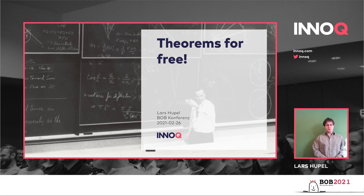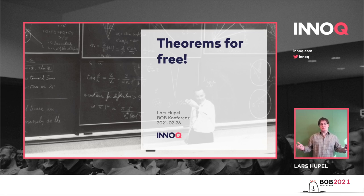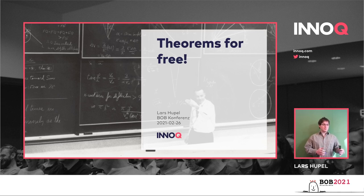Hello! Today I'm going to talk about Theorems for Free, which is also the title of a seminal paper by Philip Wadler. In this paper he describes how you can just take a look at the type signature of a Haskell function and by this type signature alone you can derive a bunch of theorems about what this function can or cannot do and how it relates to other functions.